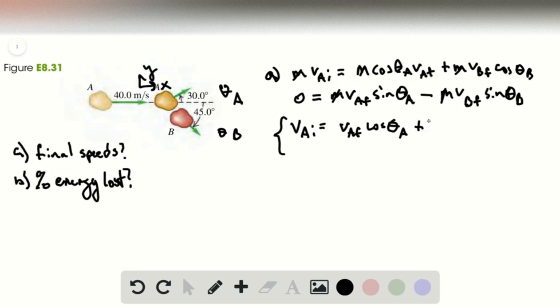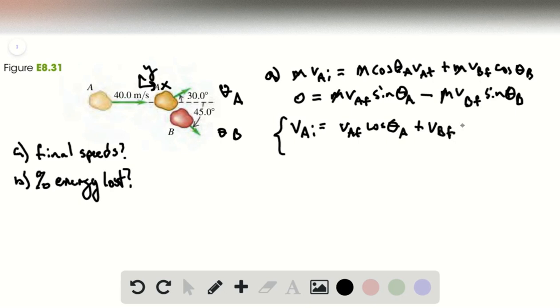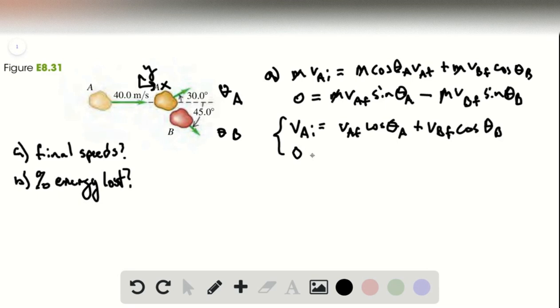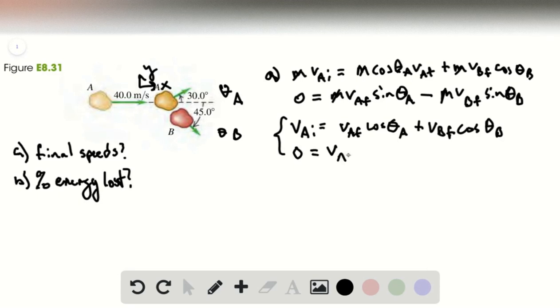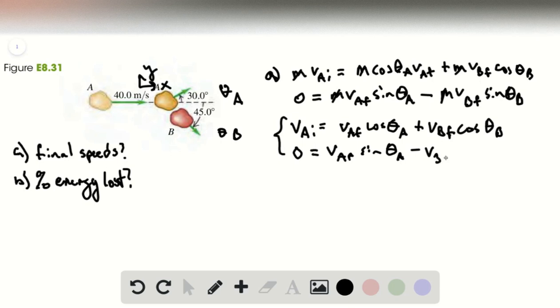The unknowns being the final speeds of A and B. And so you can take whatever way you like for solving this type of thing, where you have a system of equations. There's a few ways of doing it.